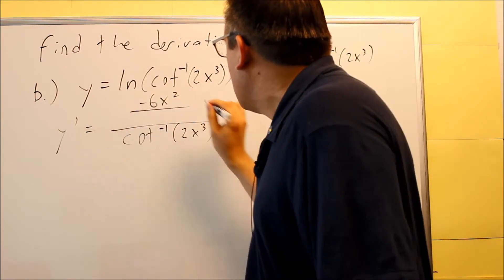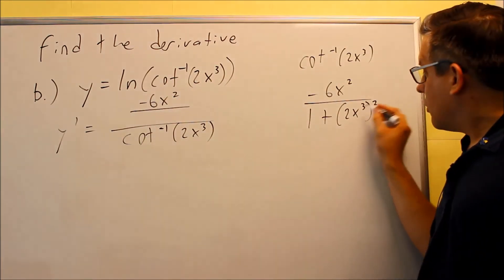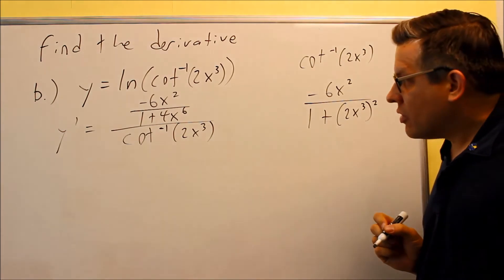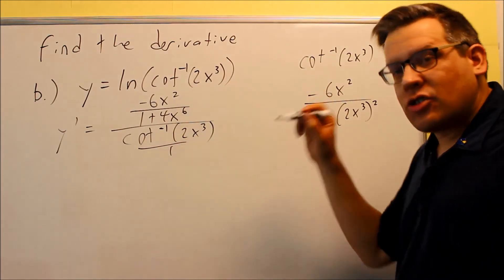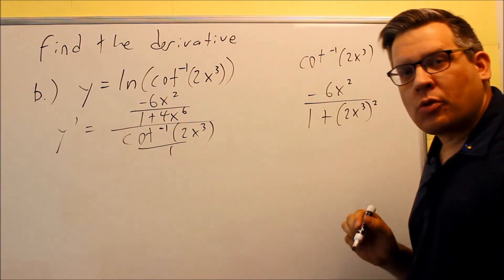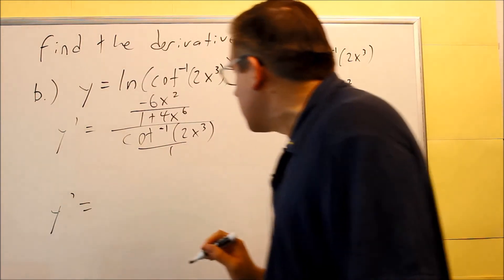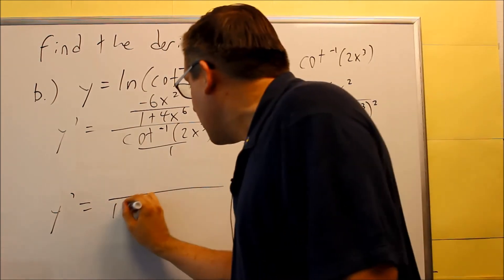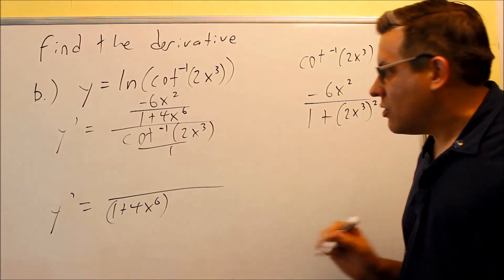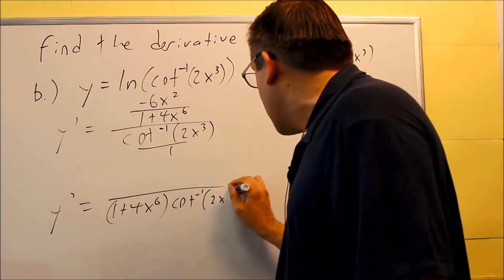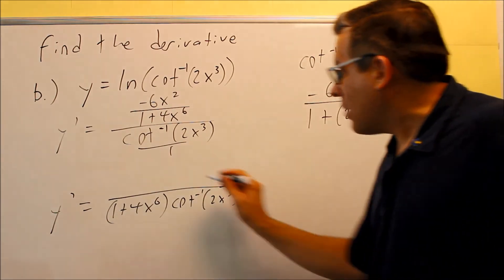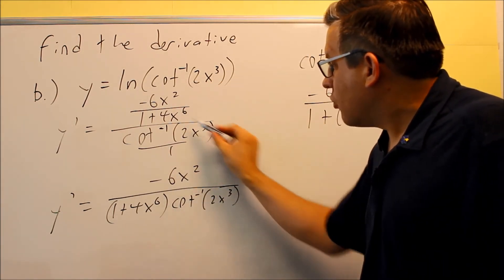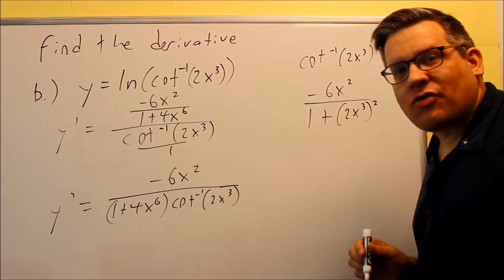So we have negative 6x squared on top, and on the bottom we square the inside: 1 plus 4x to the 6th, because we multiply the exponents. This can be written over 1, giving us a fraction over a fraction. We take the top fraction and multiply by the reciprocal of the bottom one. On the bottom we get 1 plus 4x to the 6th, times inverse cotangent of 2x cubed. On top we have negative 6x squared. This is as far as you can go with the answer.